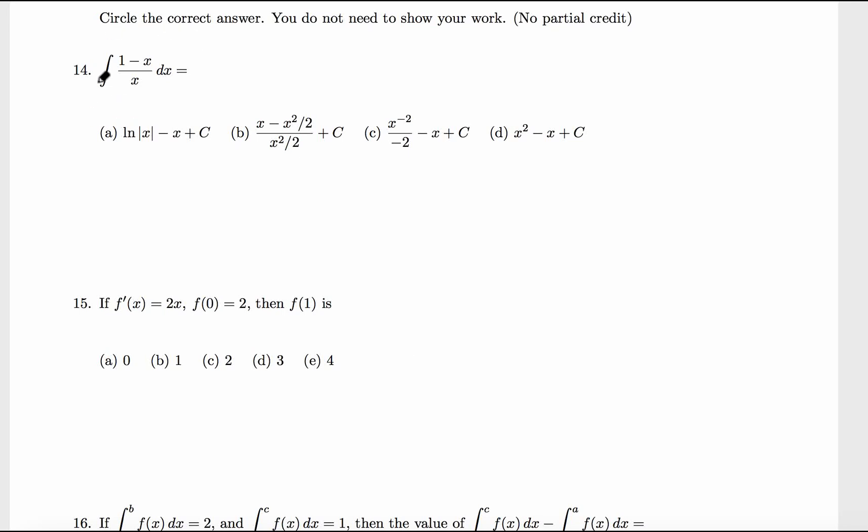Anti-derivative of (1-x)/x. There is no quotient rule, and by the way, we cannot find the anti-derivative term by term like anti-derivative of 1 minus anti-derivative of x over anti-derivative of x. We cannot go term by term. We need to get rid of this fraction by separating into two fractions: 1/x minus x/x, which is 1.